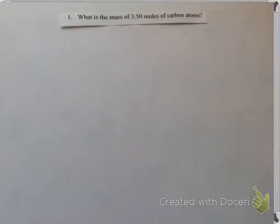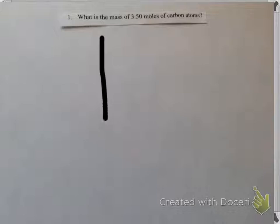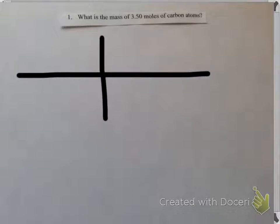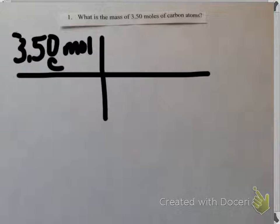In Problem 1, you're asked to find how much 3.5 moles of carbon atoms weigh. You're going to set up your t-chart like you normally do and put the given in the top left. Units are very important. So I have 3.5 moles of carbon in the top left, and I'm forced to put moles of carbon in the bottom right. By the way, MOL is shorthand for moles.